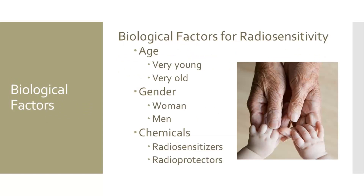There are a number of other biological factors that affect an organism's radiosensitivity. The very young and the very old are more sensitive to the effects of radiation. An embryo is ten times more sensitive to radiation than an adult, because of the rapid reproduction of cells. However, as we age, the reproduction of cells begins to slow, our immune system weakens, and the defense against cell mutations isn't what it once was, making older individuals more likely to develop cancer and experience cell death more frequently.